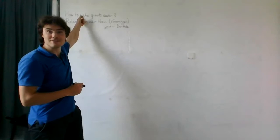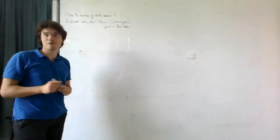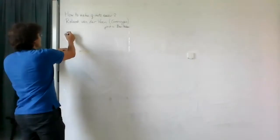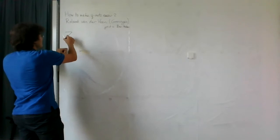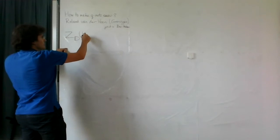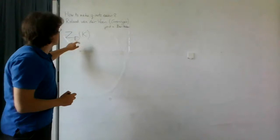Welcome to the second part of my talk on how to make quantum invariants easier. This is joint work with Dror Barnatan. My name is Roland van der Weelen from the University of Groningen. Recall from last time that we discussed an invariant z related to the Drinfeld double of an algebra of a knot.